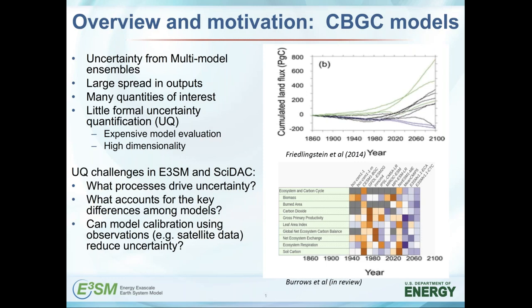On the other hand, there's not much in the way of formal uncertainty quantification of these models, especially for individual modeling centers. The primary reason is that these models are very expensive to run — it could take many millions of CPU hours to complete a simulation — whereas UQ methods generally require large ensembles of simulations, and these models contain many uncertain parameters, creating a high-dimensionality challenge.